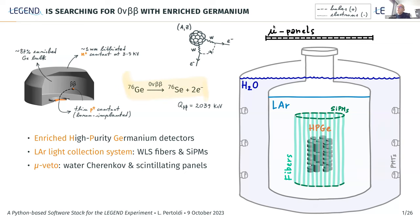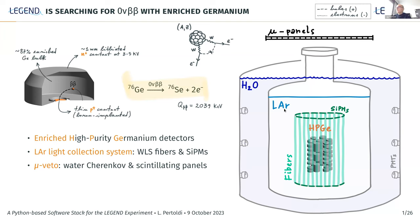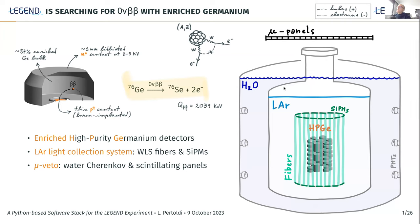LEGEND is an ultra-low background neutrinoless double beta decay experiment searching for the decay with enriched germanium. We use germanium detectors enriched in germanium-76, which is the decay candidate — simultaneously a source of the decay, the signal, and the detector. These germanium detectors are arranged in an array at the core of the experiment, submerged in a liquid argon tank equipped with instrumentation to read the scintillation light produced, and at the same time acting as a passive shield against external radiation. All of this sits inside a water tank that serves as both passive and active shield, acting as a water Cherenkov veto and together with scintillating panels at the top makes up the muon veto of the experiment.